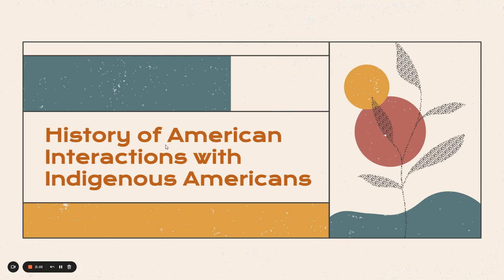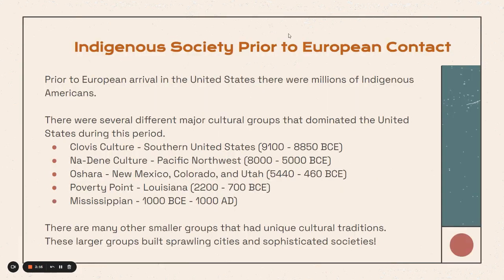Let's talk about the history of American interactions with Indigenous Americans, because I think that's an important part of our civic history. Prior to European contact, there were millions of Indigenous Americans. There were several different major cultural groups that dominated the United States before Europeans arrived, like the Clovis culture, the Nadene culture, the Oshara culture, Poverty Point in Louisiana, and the Mississippian culture. There were many other smaller groups that had unique cultural traditions, but these larger groups built sprawling cities and sophisticated societies, just as sophisticated as the Europeans who would eventually land in North America.